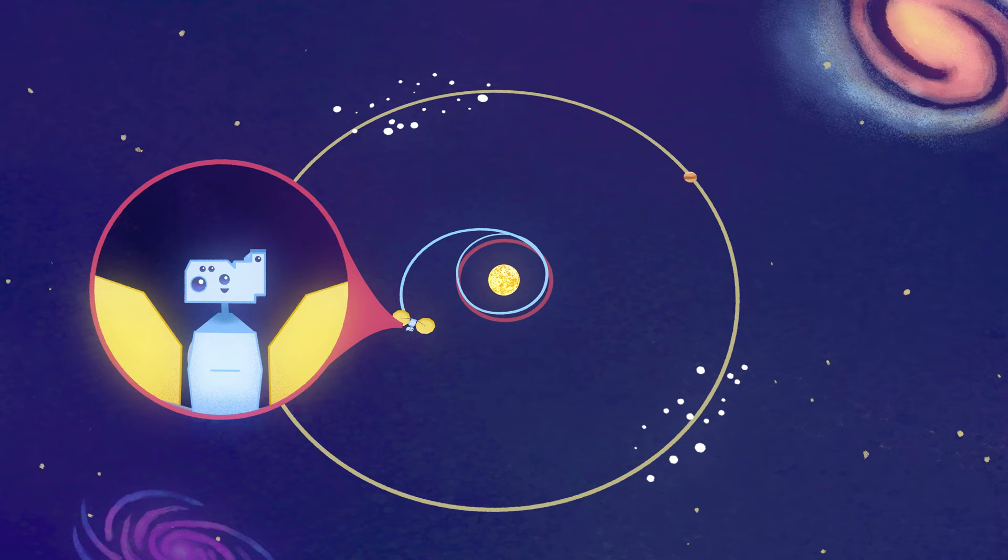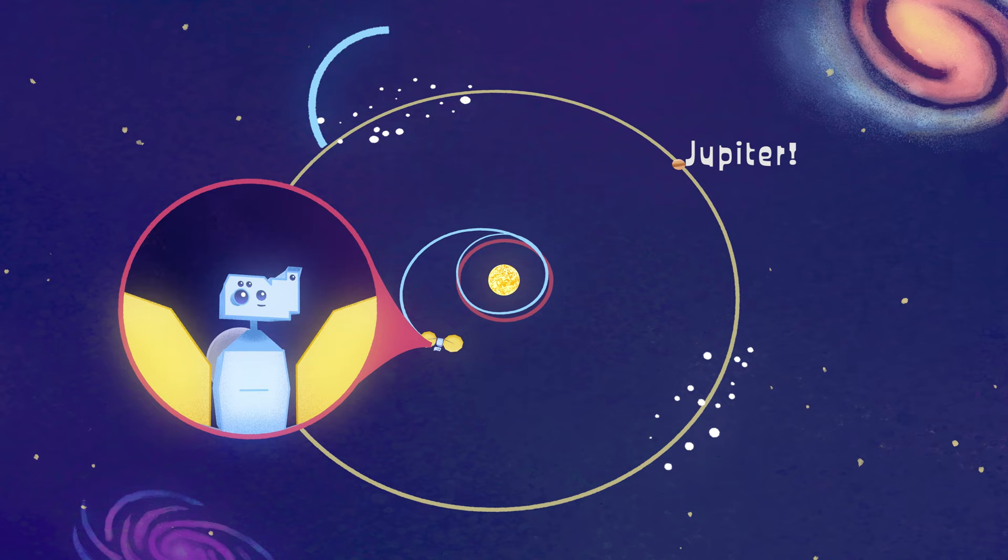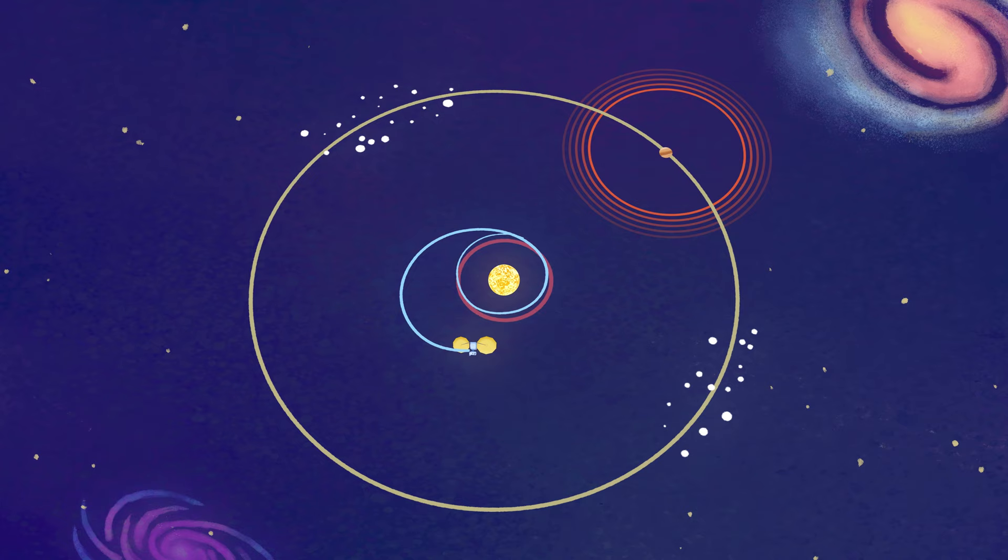The Trojan asteroids are found in Lagrange points, which are these special places that lead or follow the planet in its orbit by 60 degrees. It's sort of where the gravitational force of the planet and the gravitational force of the Sun all cancel out.